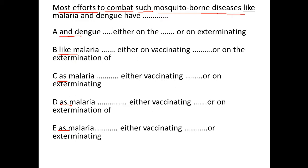Now if you look at the other part, it says 'either...or,' which demands parallel construction — either X or Y. One option says 'either vaccinating or on' — they are not parallel, so eliminate that. Another says 'either vaccinating or on' again — not parallel, eliminate. But 'either vaccinating or exterminating' — they are parallel, hence that is the correct answer. Thank you.